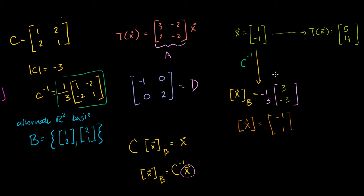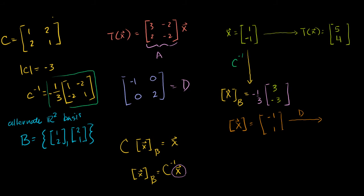Interestingly, it just swapped the first and second entries. Now let's see what happens when we apply D to x in B-coordinates. D should be our transformation matrix when dealing in B-coordinates. So applying D to (-1, 1): the first entry is negative 1 times negative 1 plus 0 times 1, which is 1. The second entry is 0 times negative 1 plus 2 times 1, which is 2. So we get (1, 2).